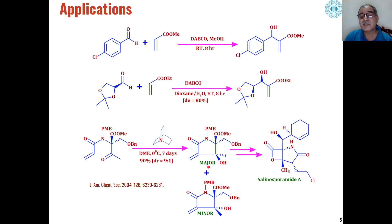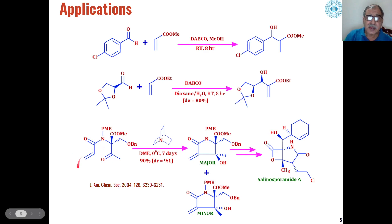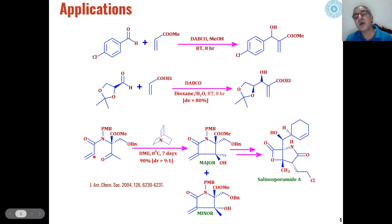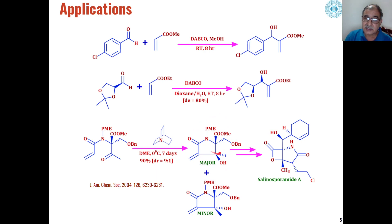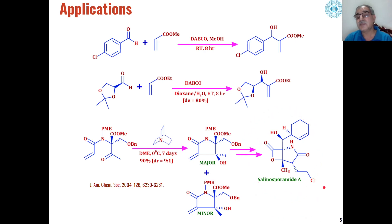This gives two products: one major product and one minor product. Here, the alpha-beta unsaturated ketone part acts as the alkene of the Baylis-Hillman and another part acts as the carbonyl component, so an intramolecular reaction takes place. Because of the enantioselective nature of the substrate, either one diastereomer or the other can be obtained, with one being the major product. Through further reaction steps, this leads to the formation of seleosporamide A, a biologically active natural product.